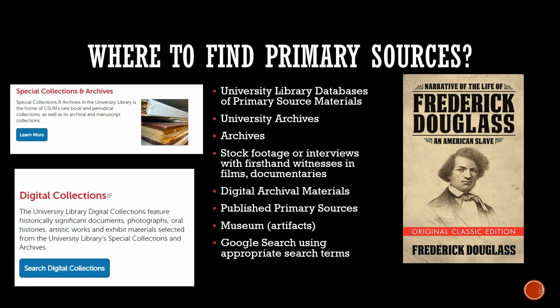Universities often have their own archives where they keep historical documents. For example, here at Cal State Northridge, they have their own special collections and archives department. The same goes for Arizona State University and Cal State Dominguez Hills. If you wanted to look at primary source documents held locally at your university, you can schedule something with the archivist.